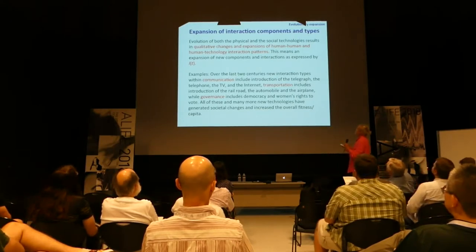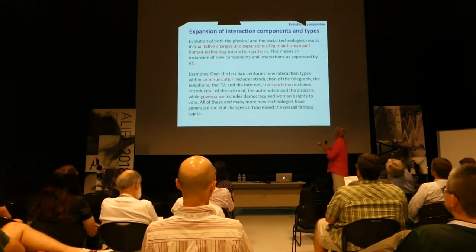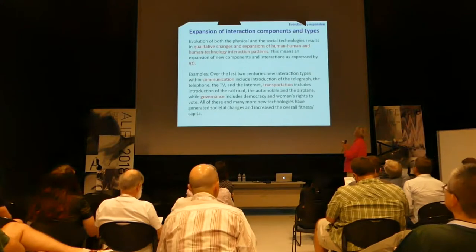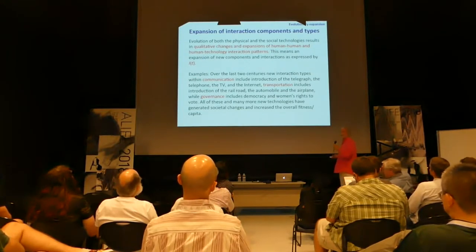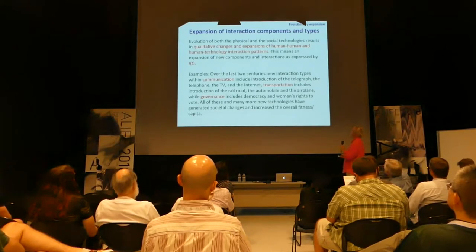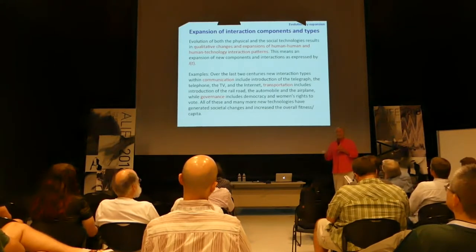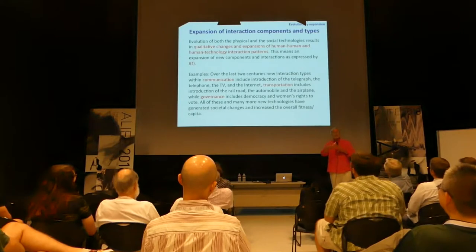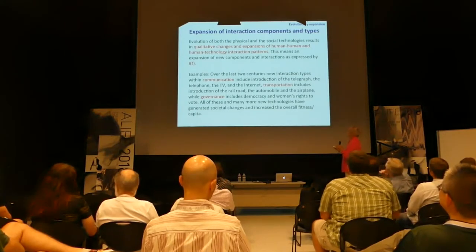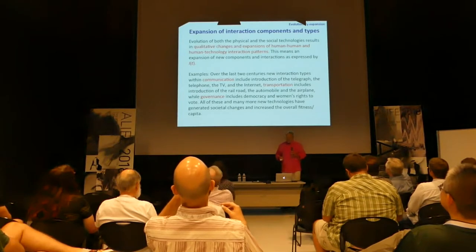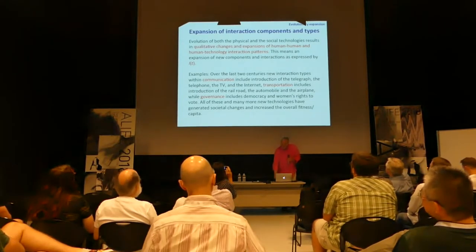As we invent new physical technologies and new social technologies, the way we interact with each other — and the way we interact with technology, and the way technology interacts with technology — changes dramatically. The interaction function I(T) is expanding dramatically over time. For example, looking at the last couple of centuries: communication has seen the telegraph, telephone, TV, and internet; transportation includes the railroad, automobile, and airplane; and governance includes democracy and women's right to vote.